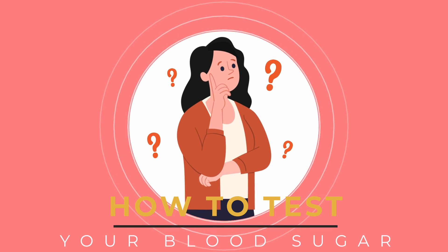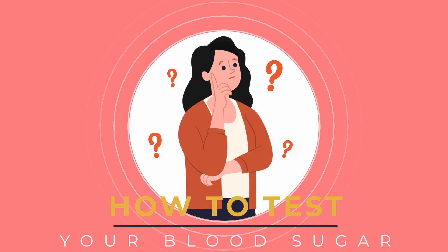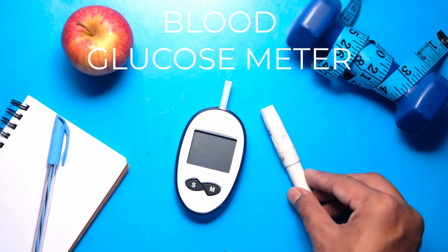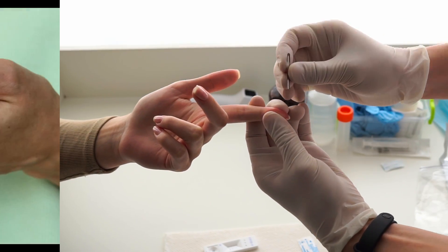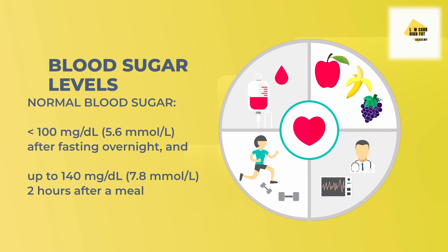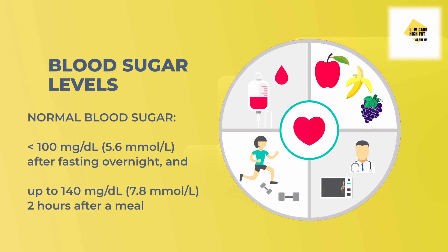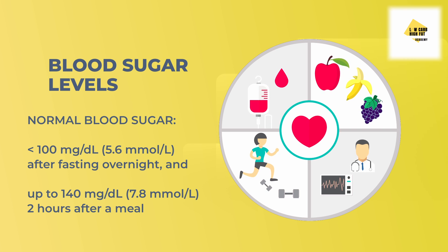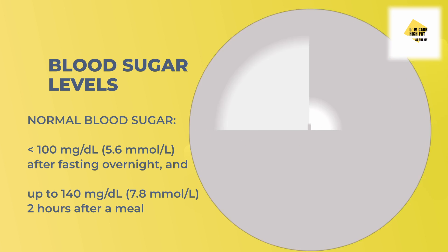How to test your blood sugar. To determine if you have high blood sugar, you can easily test for it using a blood glucose meter, either at the doctor's office or by yourself. Normal blood sugar is less than 100 mg/dL (5.6 mmol/L) after fasting overnight, and up to 140 mg/dL (7.8 mmol/L) two hours after a meal.